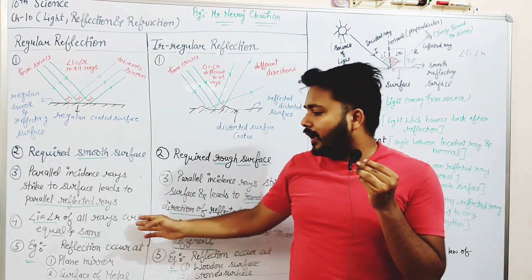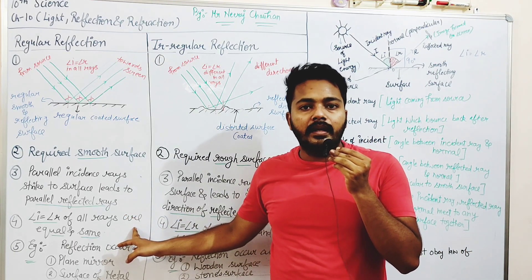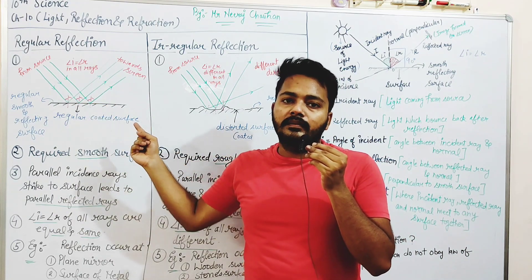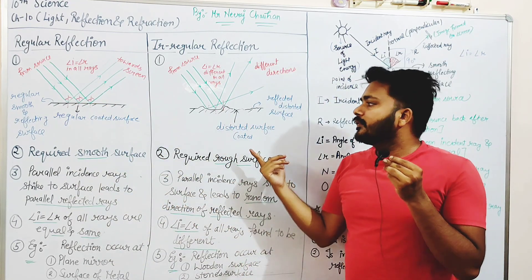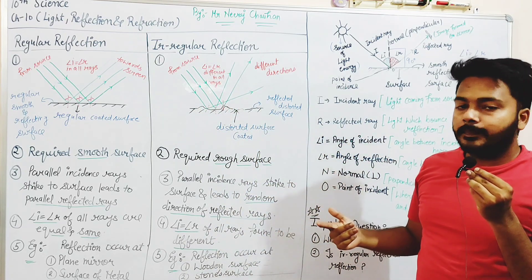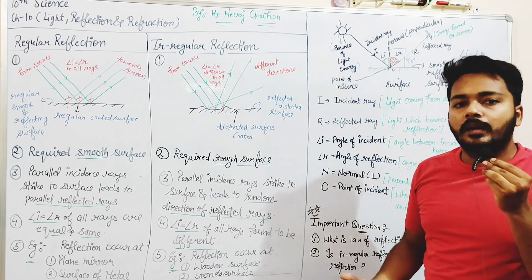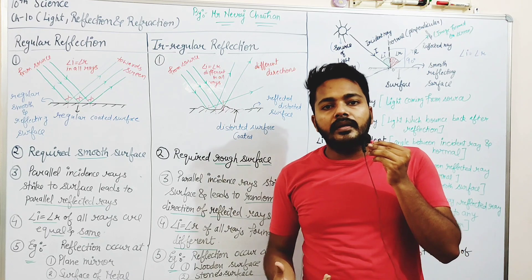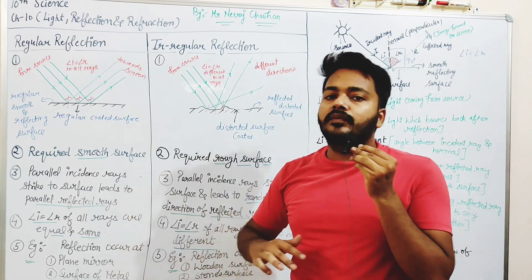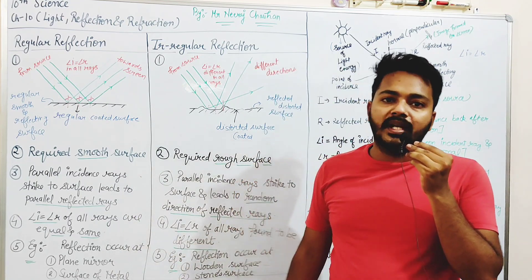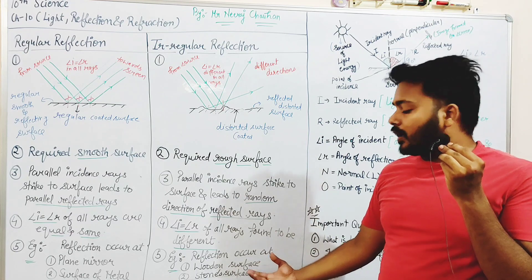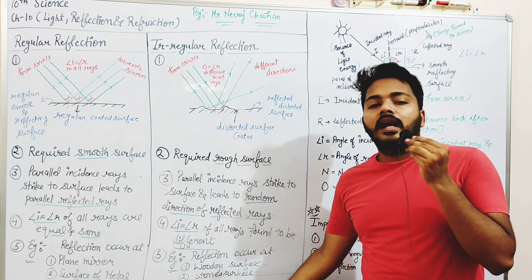To summarize: for regular reflection, a smooth reflecting surface is required, and for irregular reflection, a rough reflecting surface is required. In regular reflection, incident rays and reflected rays are both parallel, and Angle I equals Angle R for all rays. In irregular reflection, reflected rays are not parallel and the angles differ. Examples of regular reflection include a plane mirror and a shiny metal surface; examples of irregular reflection include wooden and stone surfaces.